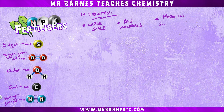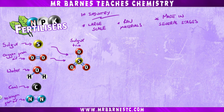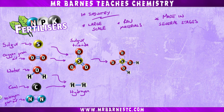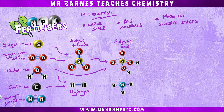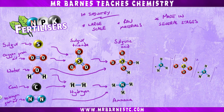The ammonium sulfate is made in several stages. In the first stage, sulfur and oxygen react together to make sulfur trioxide. Water and carbon from coal are used to make hydrogen gas. Sulfur trioxide is then reacted with water to make sulfuric acid. Hydrogen is reacted with nitrogen from the air to make ammonia — which is the Haber process. Finally, the sulfuric acid and ammonia are reacted together to make ammonium sulfate.